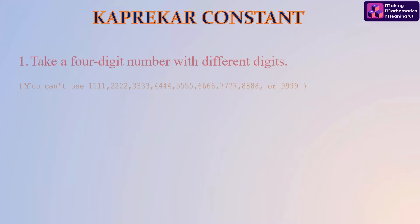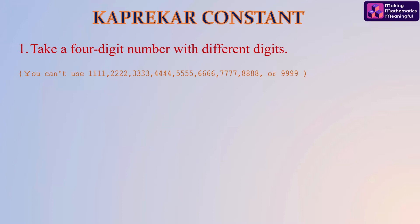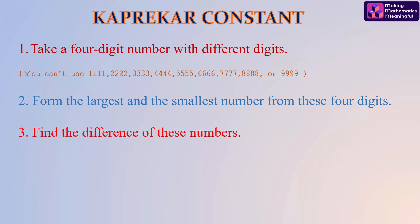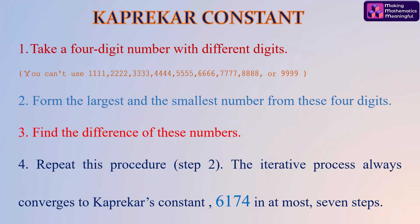So here I begin with what we mean by the Kaprekar constant. Step one: take a four-digit number with different digits — you cannot use 1111, 2222, 3333, and so on. Step two: form the largest and the smallest number from these four digits. Step three: find the difference of these numbers. Step four: repeat this procedure. The iterative process always converges to Kaprekar's constant 6174 in at most seven steps.